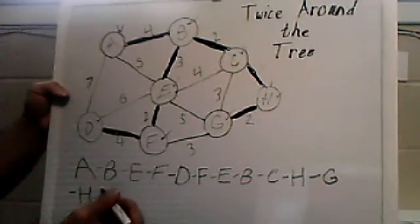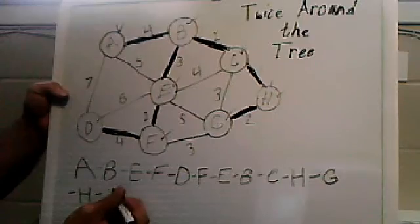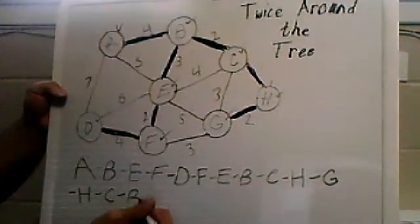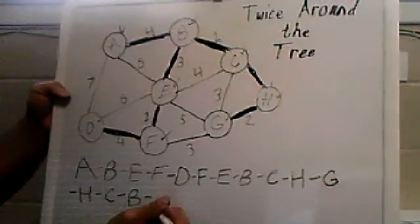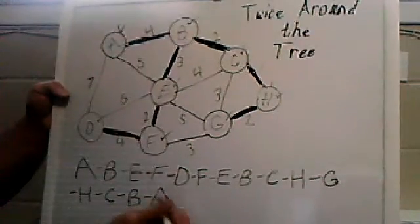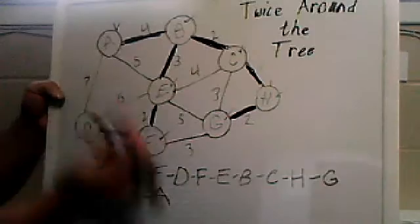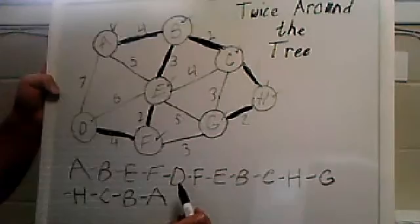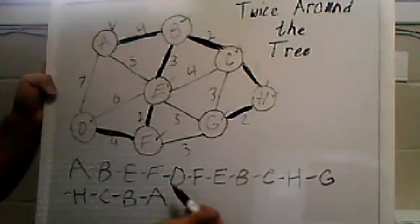Back to G, back to H, back to C, back to B, and back to A. It's important to get back to the starting vertex. Now we're going to eliminate all the repeat vertices.